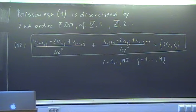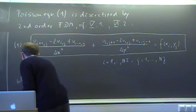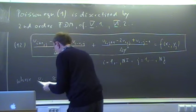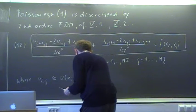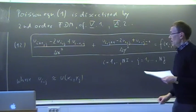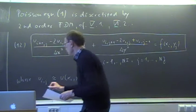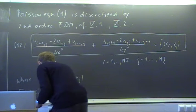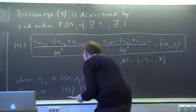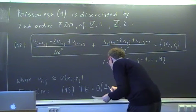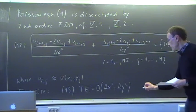So now we have this for all grid points with indices i from 1 to N_i and j from 1 to N_j. The u_{i,j} is approximating the exact solution at grid point (x_i, y_j). The method is second order, which we can also prove by evaluating the truncation error — you can do that yourself as an exercise — showing the truncation error is of order delta x squared and delta y squared.